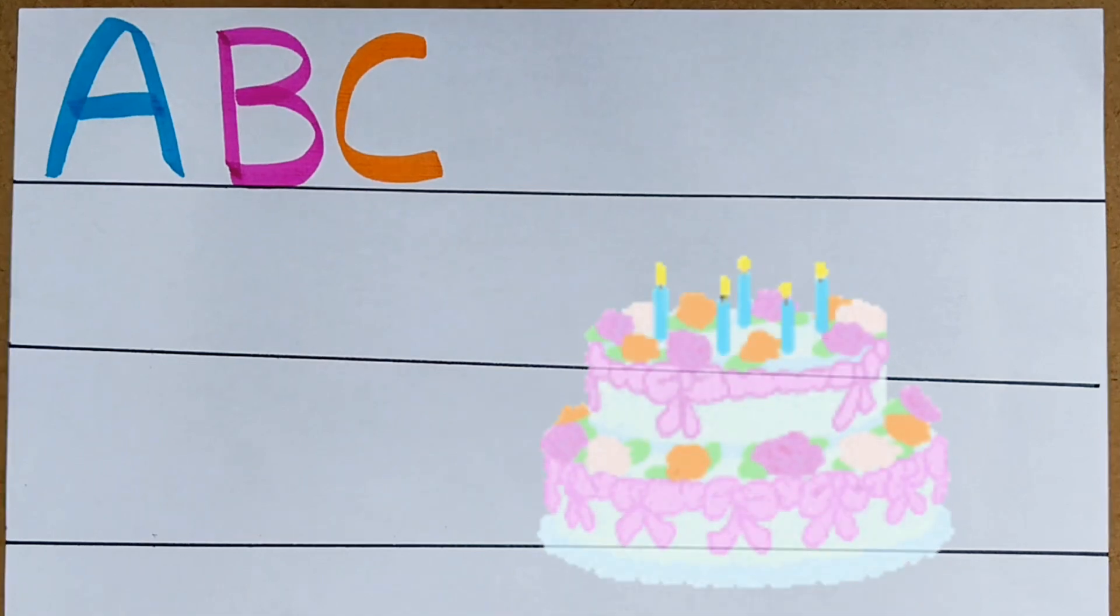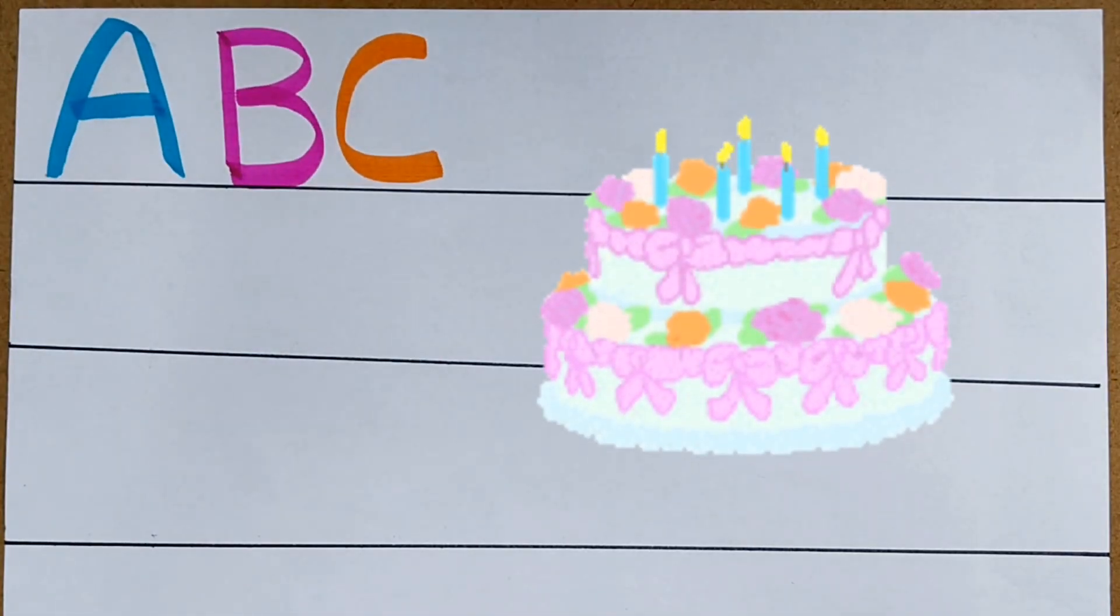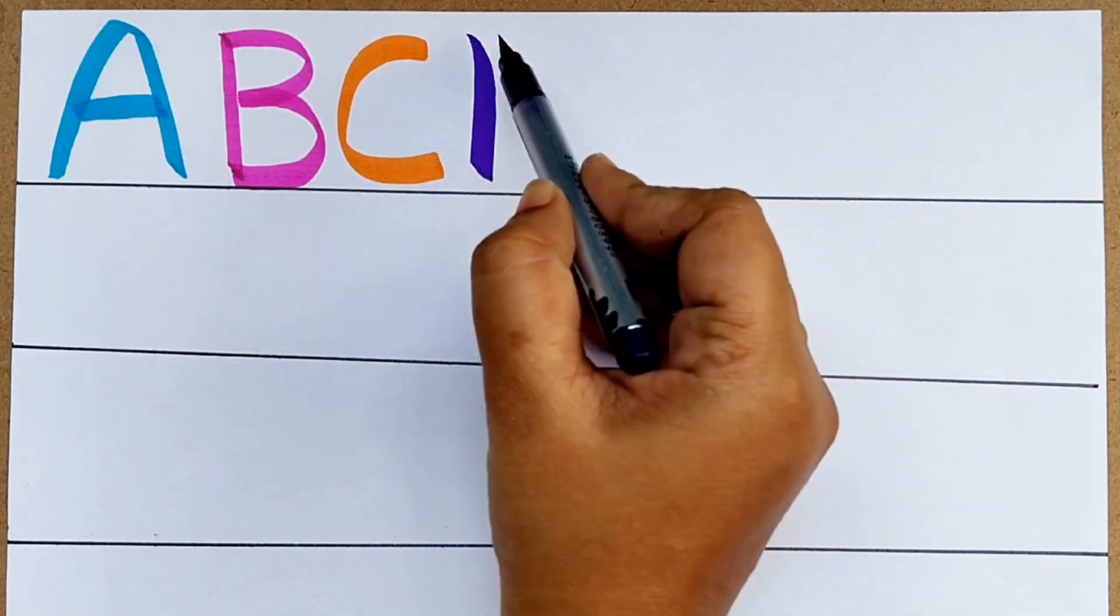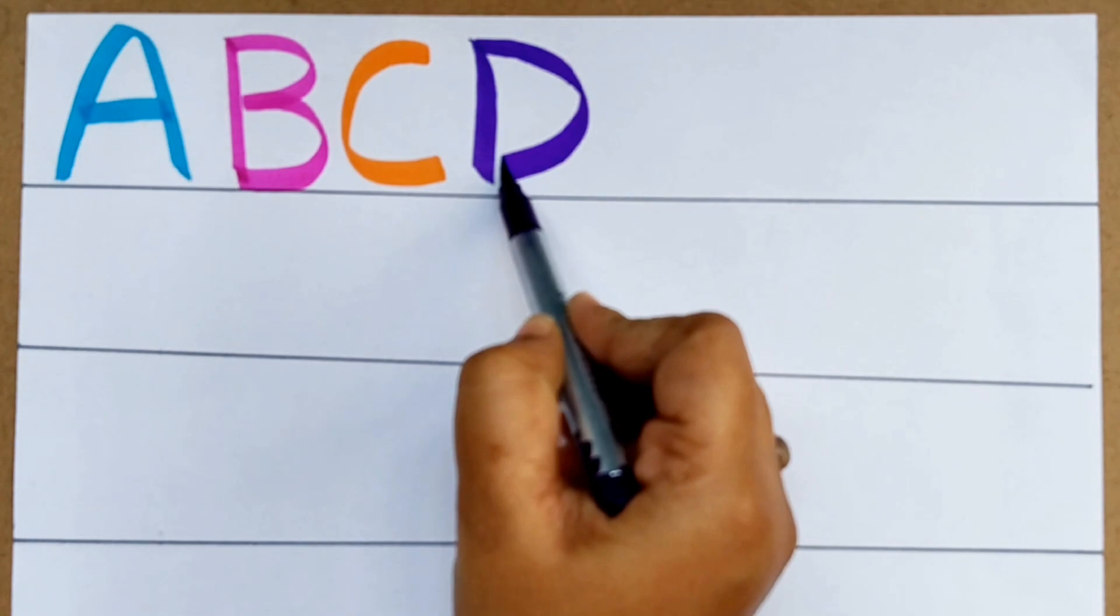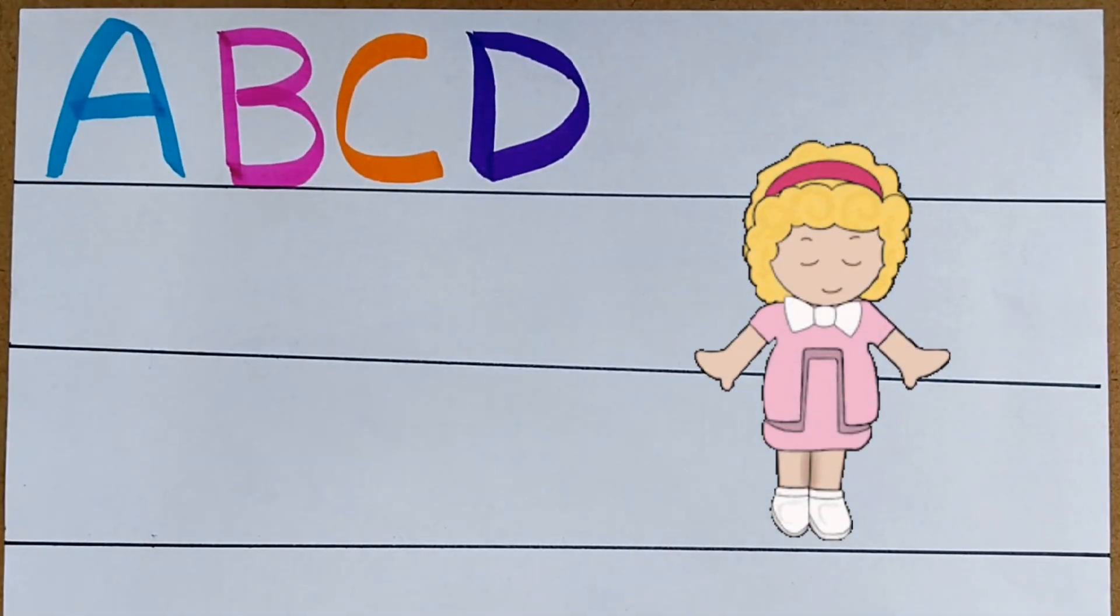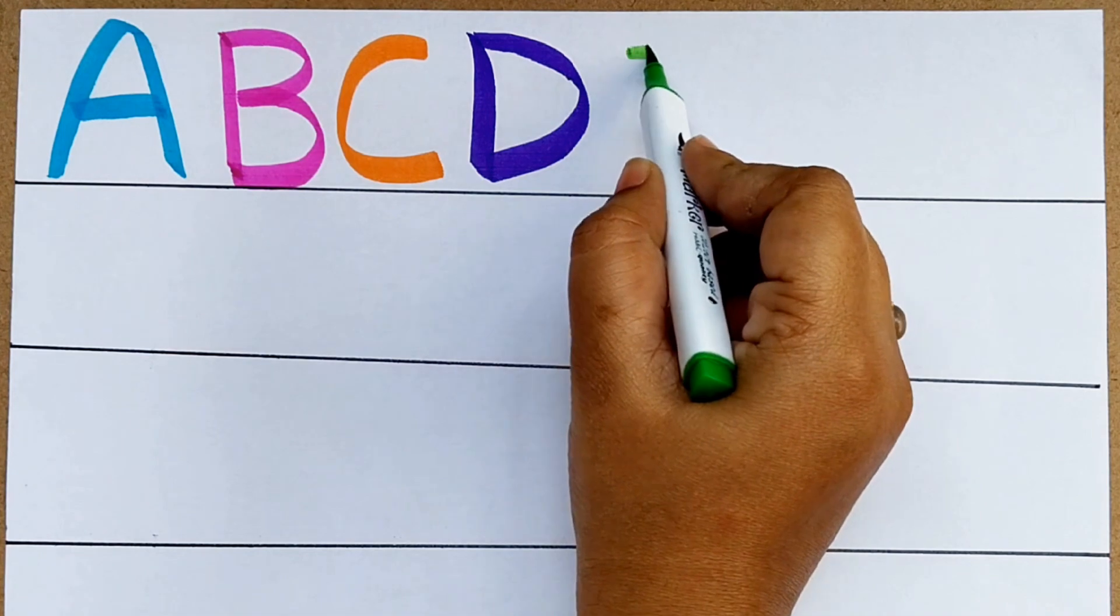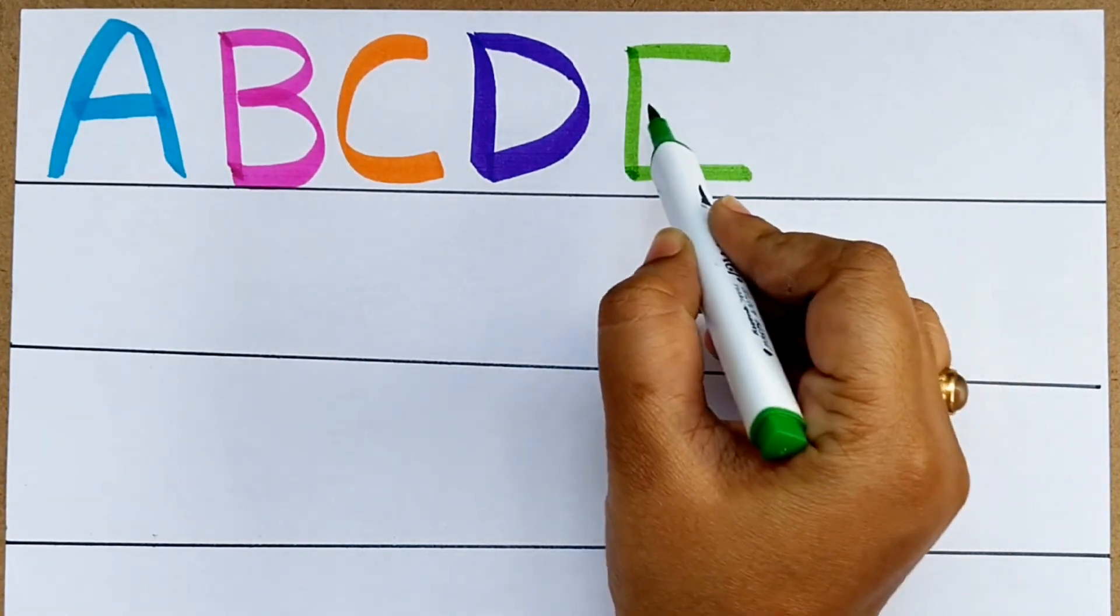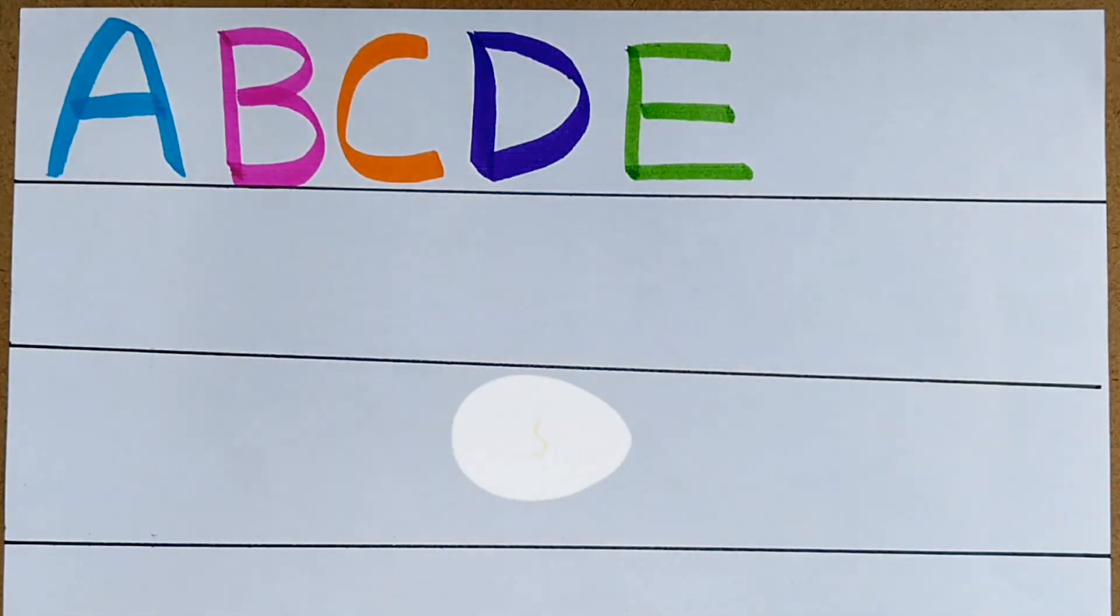C for cake. D. D for doll. D for doll. E. E for egg.